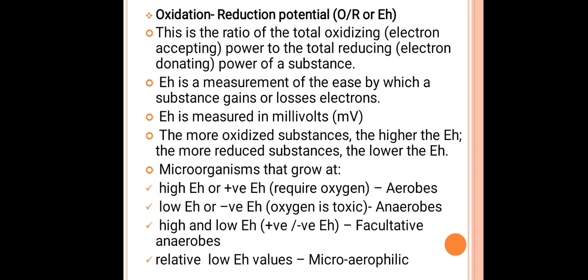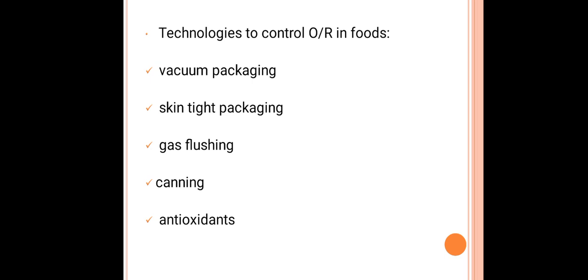When relative oxidation-reduction potential values are lower, microaerophilic organisms predominantly grow. Technologies used to control redox potential in food include vacuum packaging (total removal of air), skin-tight packaging, gas flushing, canning, and antioxidants — all of which reduce the oxidation-reduction potential.